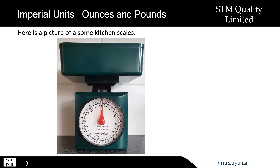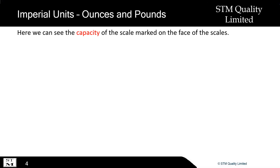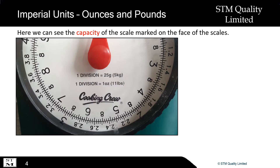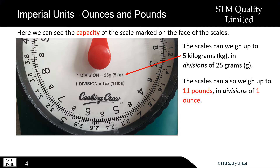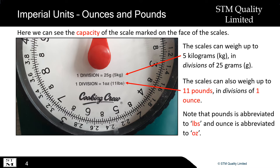Here is a picture of some kitchen scales. Let's take a closer look at the face of the dial. Here we can see the capacity of the scale marked on the face of the scales. The scales can weigh up to 5 kilograms in divisions of 25 grams. The scales can also weigh up to 11 pounds in divisions of 1 ounce. Note that pounds is abbreviated to LBS and ounce is abbreviated to OZ.